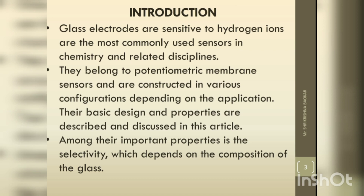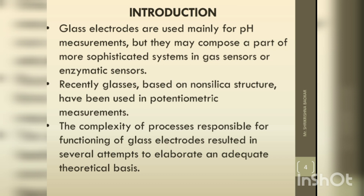Among their important properties is the selectivity, which depends on the composition of the glass. Glass electrodes are used mainly for pH measurements, but they may also compose a part of more sophisticated systems in gas sensors or enzymatic sensors.